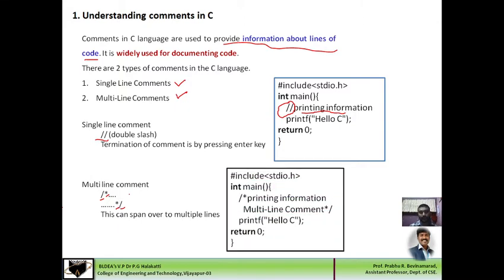Let us take an example. In this program fragment, we want to put a comment for these two lines. Therefore, at the beginning of the first line we have inserted a multi-line comment opening symbol, and at the end of the last line we have inserted the closing comment symbol. Hence, these two lines are ignored by the compiler during program execution.